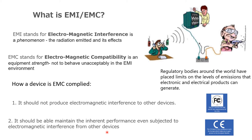Almost all countries have a regulatory body around the world, and they have placed limits for each device category — for example, medical, military, and industrial categories all have different limit levels. In the US, the FCC is the regulatory body that takes care of EMI/EMC compliance.